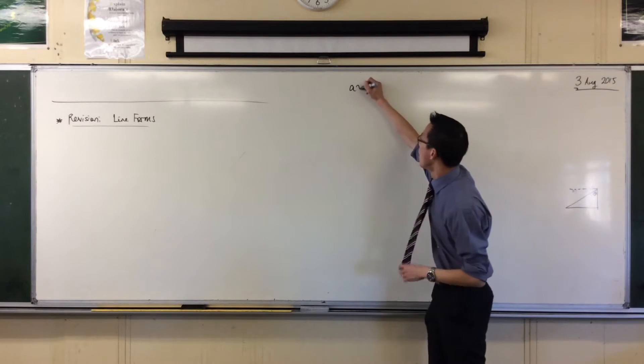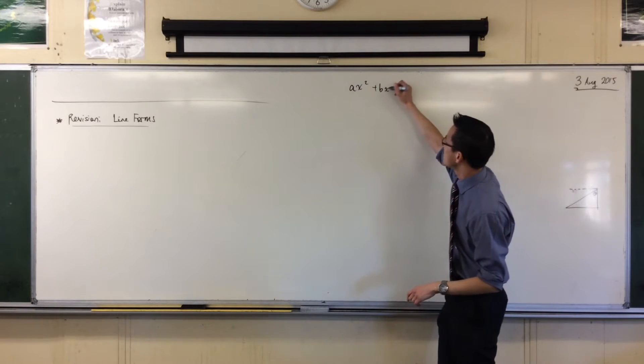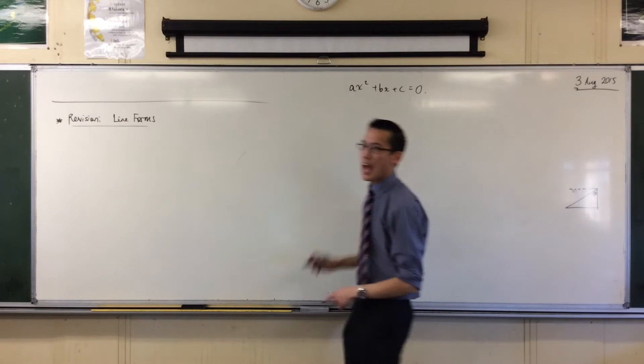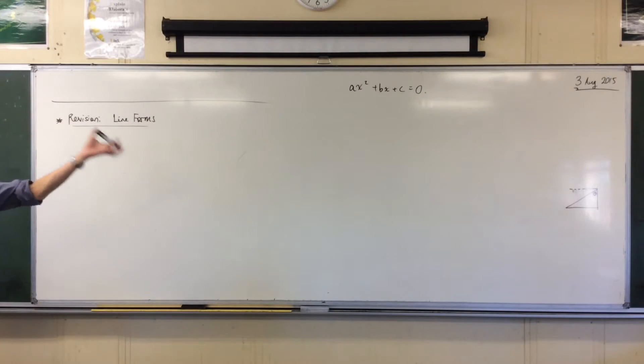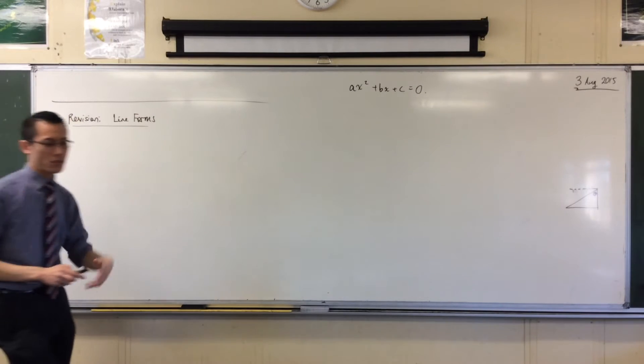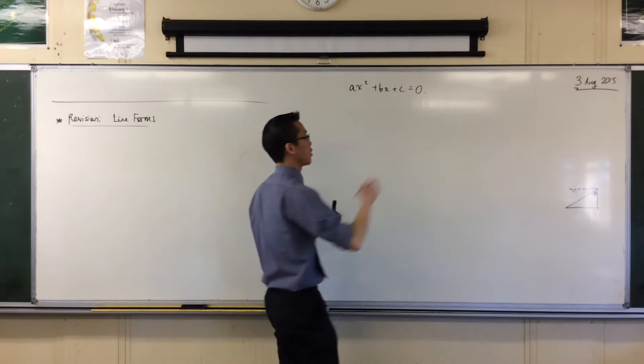We looked at the general form of a quadratic, something like this, and we went from there, we completed the square, and out popped magically the quadratic formula. Now, this you'll remember is the general form of a quadratic, the general form.